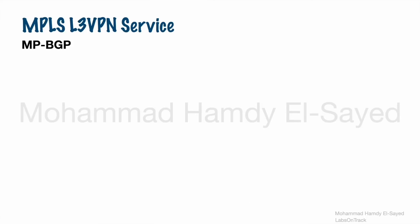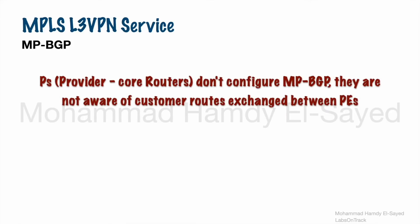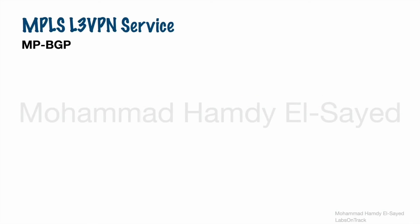In this lecture, we are going to explore more about MPBGP routing protocol that will be used between PEs to distribute VPN IPv4 customer routes. MPBGP is not configured on the P routers, or the transit routers — the routers in the MPLS network that connect PEs to each other. They are not aware of MPBGP and are not aware of the VPN IPv4 customer routes. MPBGP is configured only between the PEs.